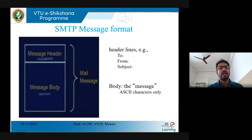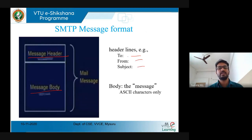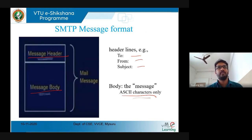Now we'll see how the SMTP protocol message format looks. It consists of two important parts: one is the message header and one is the message body. In the header you will get the TO, FROM, and SUBJECT fields — the recipient's address, the sender's address, and the subject of the message. The body consists of the actual ASCII data. This is the same as what you see when you click the Compose button in your email client.